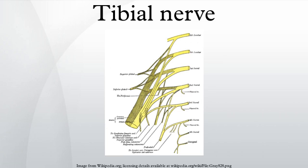It also gives an articular branch to the knee joint, and a cutaneous branch that will become the sural nerve. The sural nerve is joined by fibers from the common fibular nerve and runs down the calf to supply the lateral side of the foot.